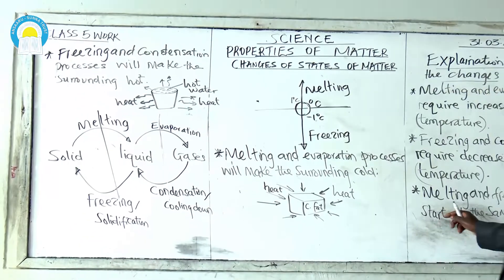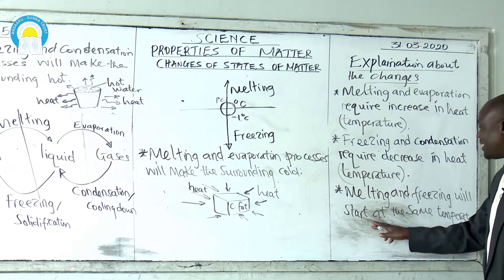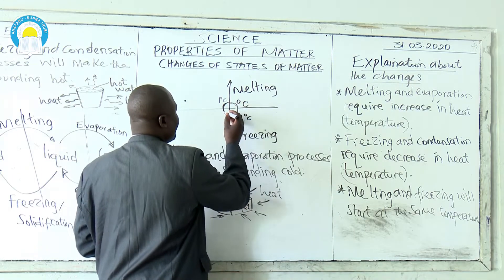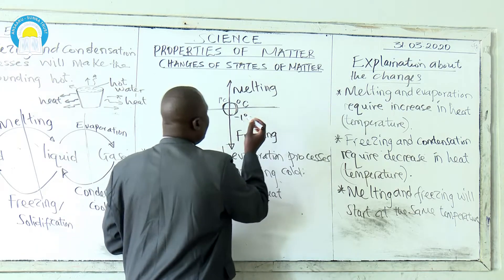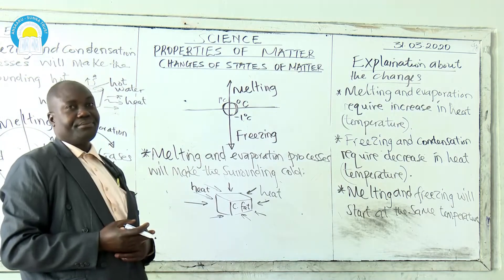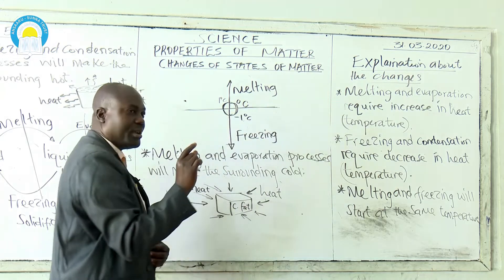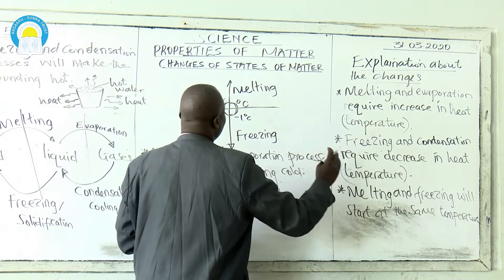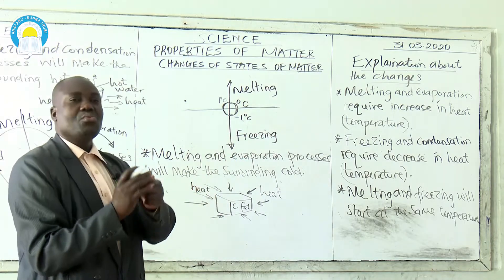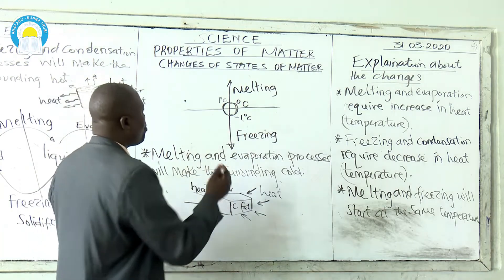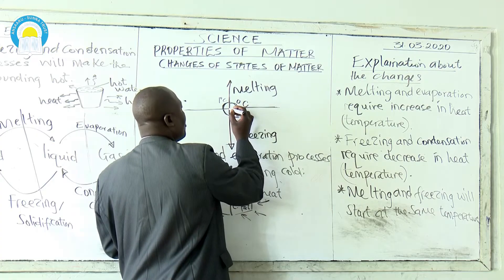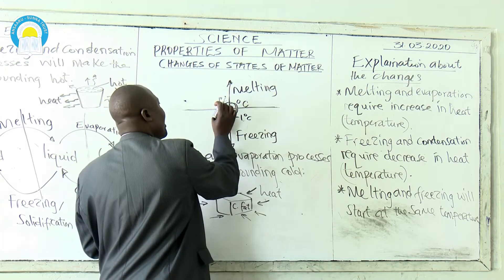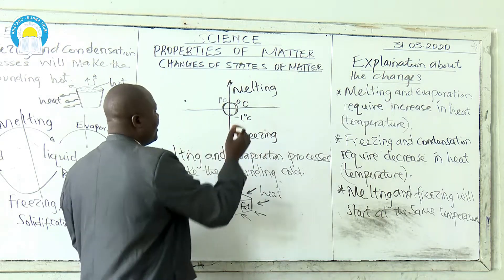Melting and freezing will start at the same temperature. For example, let us say this is zero degrees Celsius. If you take something like cooking fat — which is a solid below zero degrees — and you introduce heat, that solid will start changing into a liquid. The temperature is going from zero upwards, and that process is known as melting.